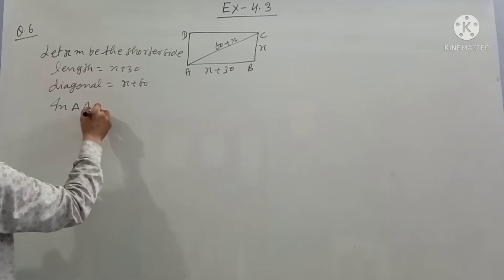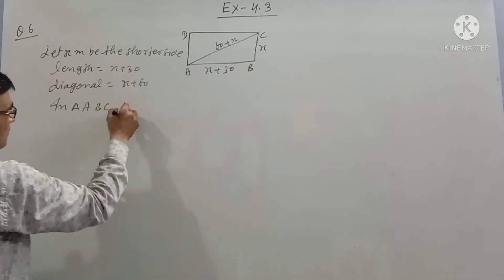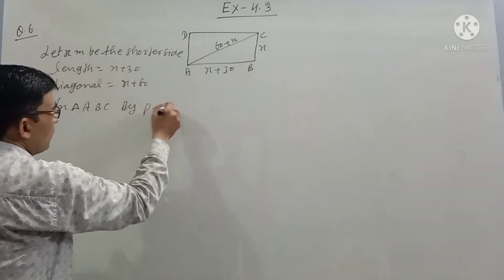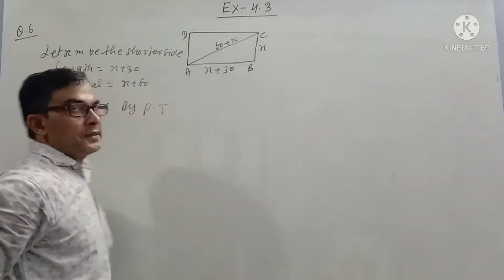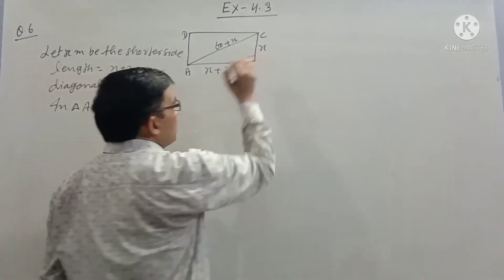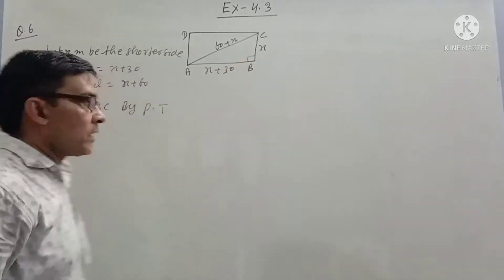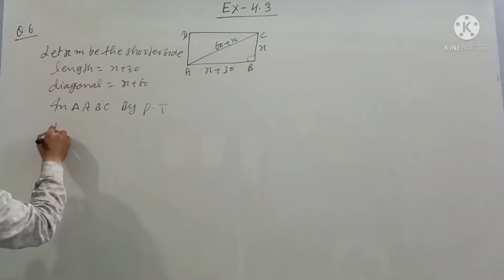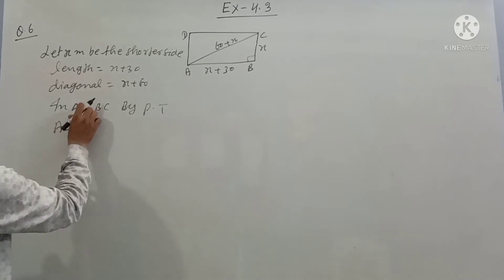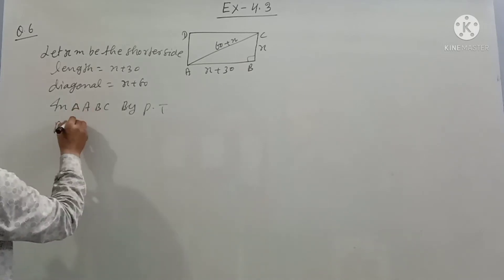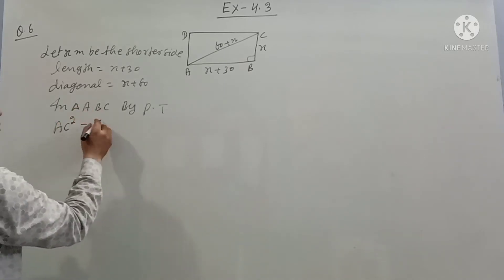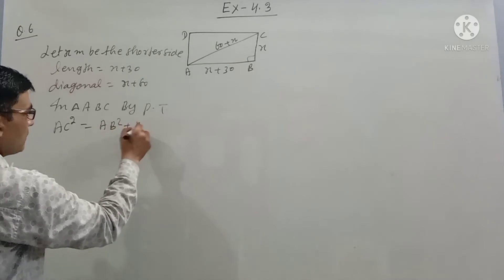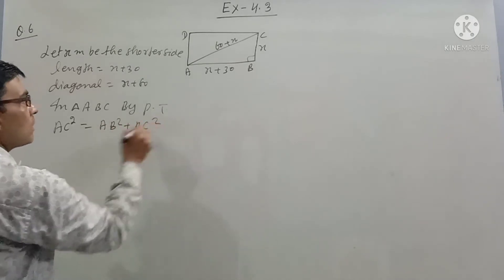In triangle ABC, applying the Pythagoras theorem: AC squared is equal to AB squared plus BC squared.